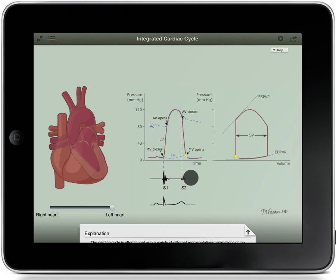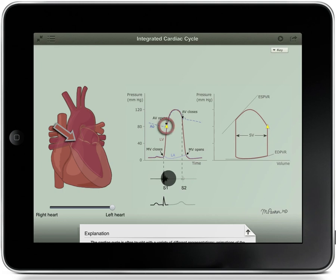You can also drag your finger along the time axis to see how the valves opening and closing correspond to the pressure changes. For example, you can see that the aortic valve opens when the left ventricular pressure rises above aortic pressure.